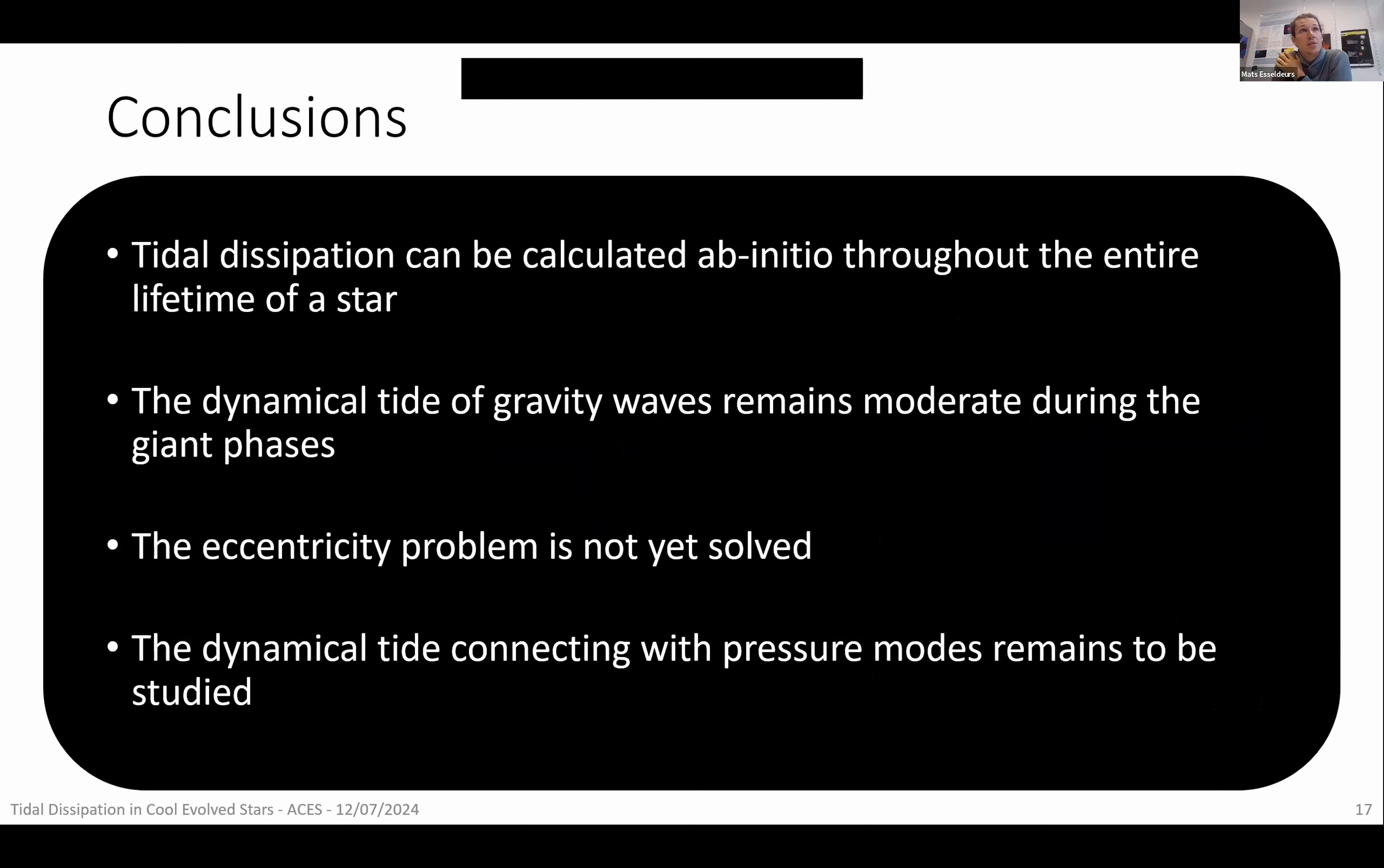And that brings me to my conclusions. The tidal dissipation can be calculated ab initio throughout the entire lifetime of the star. And when looking at the dynamical tide and the equilibrium tide, the dynamical tide of the gravity waves remains quite moderate compared to the equilibrium tide during the giant phases. And when we use these computations to see what happens to the eccentricity, well sadly our eccentricity problem is not solved yet. So we need eccentricity pumping. But this can still come from tides as the dynamical tide connecting with pressure modes. These modes we see in AGB stars, they still can be studied to see if this can cause eccentricity pumping. Thank you for your attention and I will be glad to answer some questions.